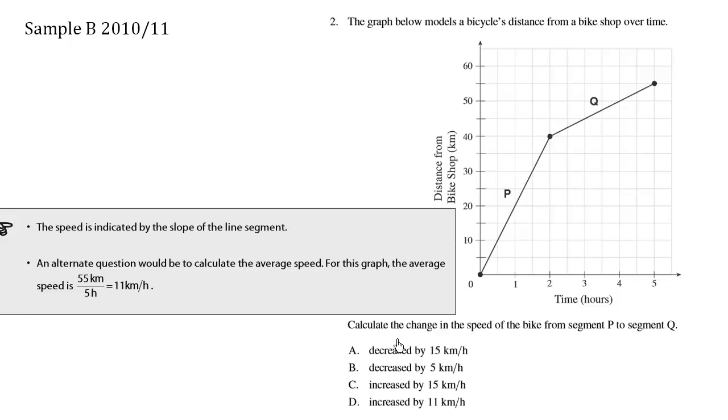Calculate the change in speed of the bike from segment P to segment Q. The tip we're given is that the speed is indicated by the slope of the line segment.